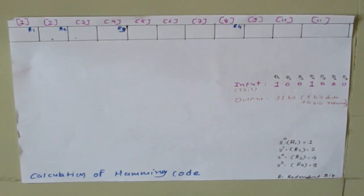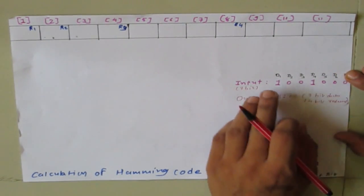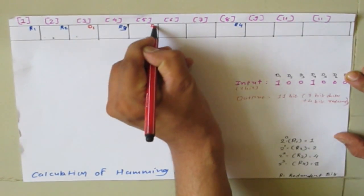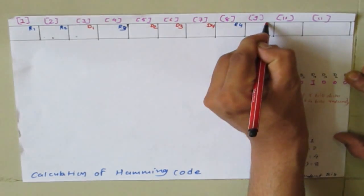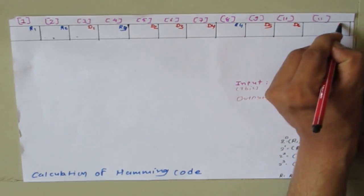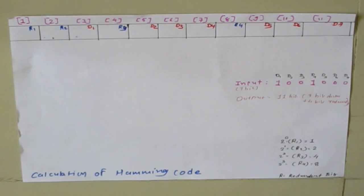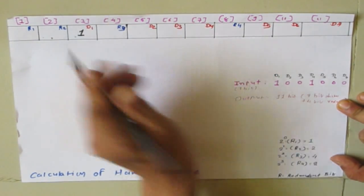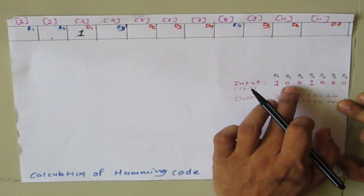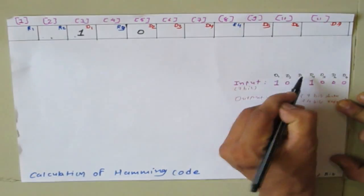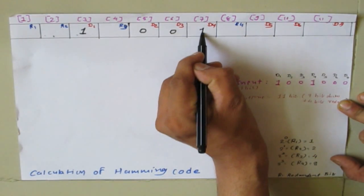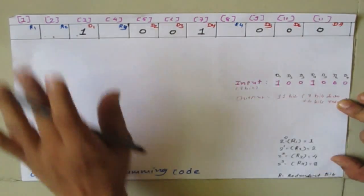The rest of the positions will be used for the data bits. Data bits d1 through d7 are placed in sequence. So d1 equals 1, d2 equals 0, d3 equals 0, d4 equals 1, d5 equals 0, d6 equals 0, and d7 equals 0 — everything is placed according to the given example.